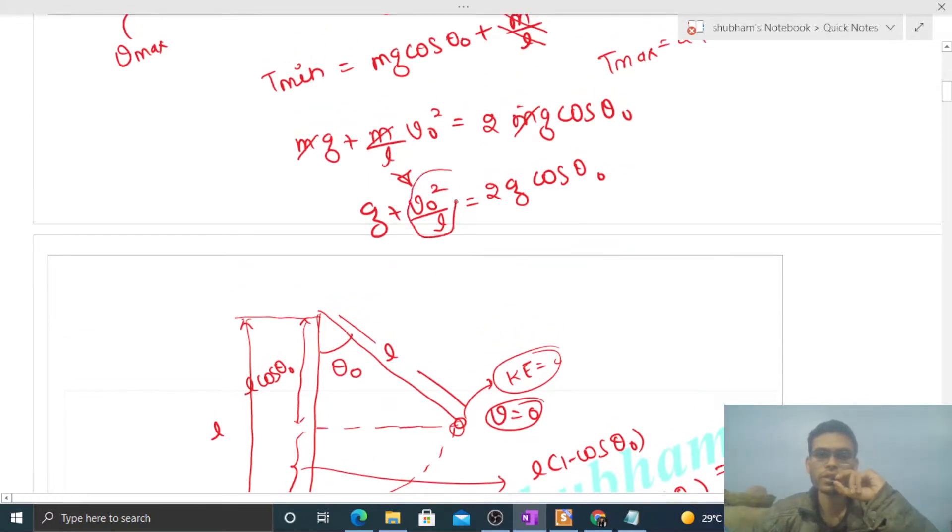2g times one minus cos theta naught plus g equals 2g cos theta naught. You can see that g cancels. So 1 plus 2 minus 2 cos theta naught equals twice of cos theta naught. So 4 cos theta naught equals 3.